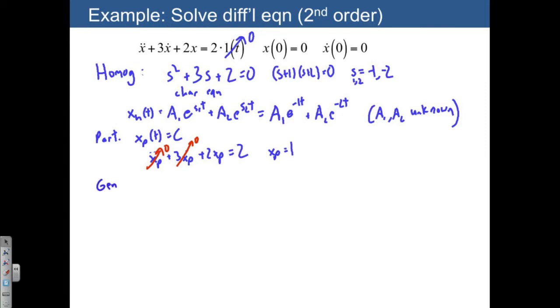Here's the general solution, homogeneous and particular parts together. That's our x of t. Then the homogeneous, we already found, a1 e to the negative 1t plus a2 e to the negative 2t plus 1.